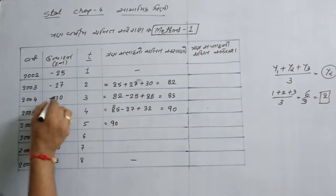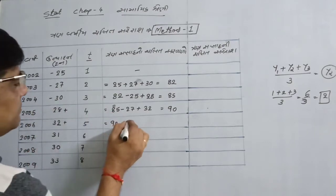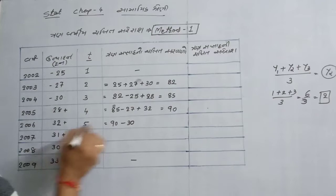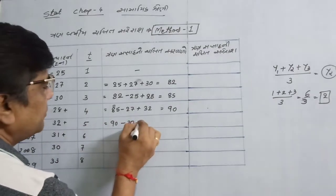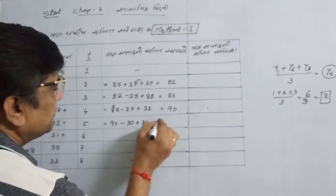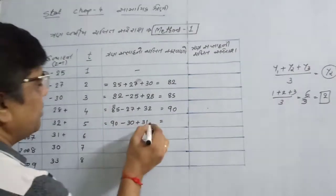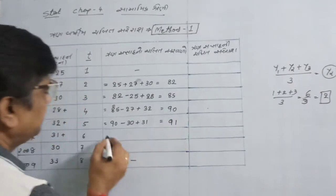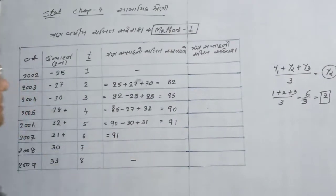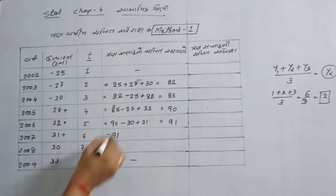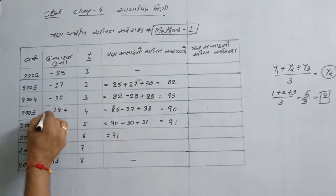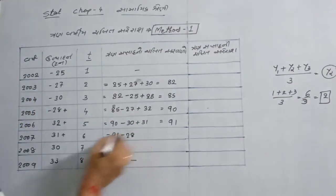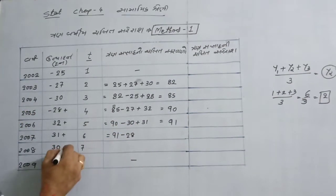Minus 13. That is 32, plus one equals 91.